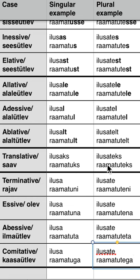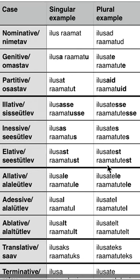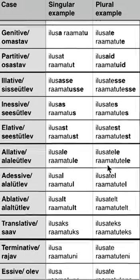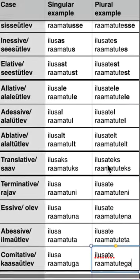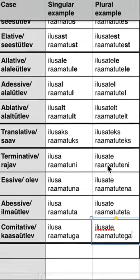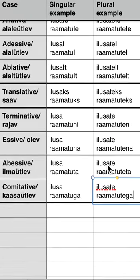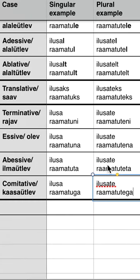This finishes all 14 cases in the Estonian language. Let's revise. The cases are: nominative, genitive, partitive, elative, inesive, elative, alative, adesive, ablative, translative, terminative, esive, abessive, and comitative. Thank you very much for watching this series and I hope that you'll enjoy the future videos as well. Have a nice day and I hope that Estonian will be your future language of choice.